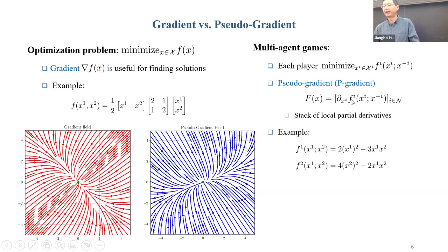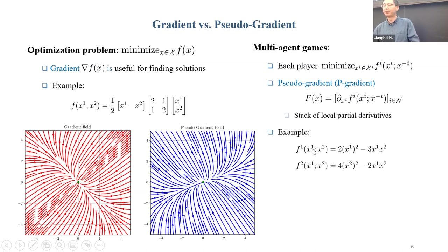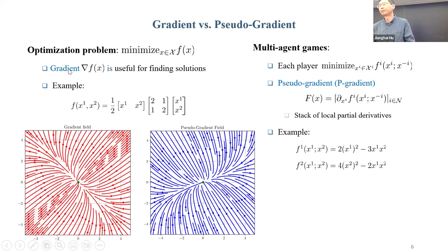When you look at multi-player games, there is an operator that plays a similar role called the pseudo-gradient or simply P-gradient operator. This operator is obtained by stacking the local partial derivatives. For player I, this is the partial derivative of his own objective function with respect to his own decision variable X^i, assuming the other actions are given. When you stack them together for all players, you get the pseudo-gradient operator. For example, in a two-player game with these two objective functions, this is the pseudo-gradient field.